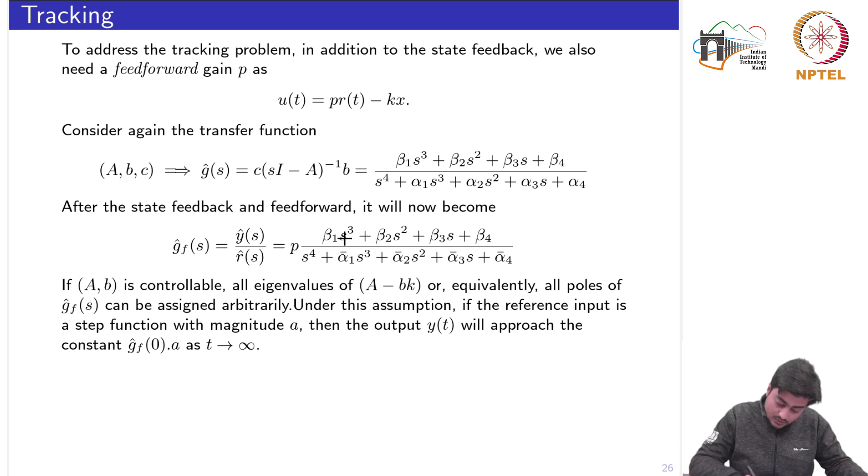If I put s is equal to 0 all this part would go away and similarly all this part would go away and we would have y hat of 0 is equal to g hat f 0 times A because A is the DC value of the reference signal.